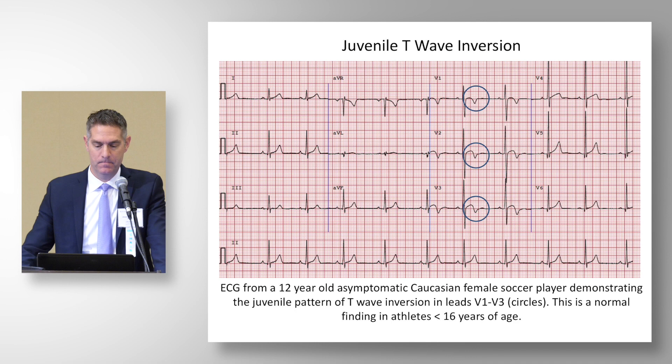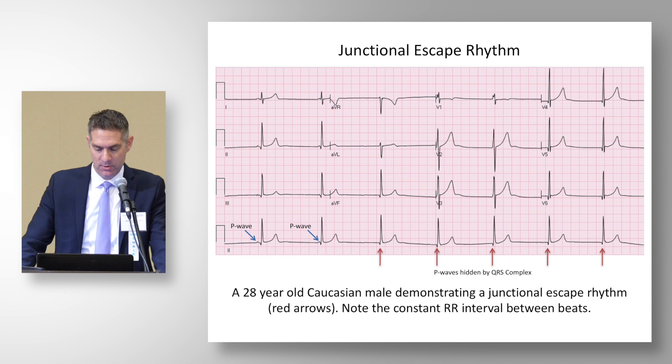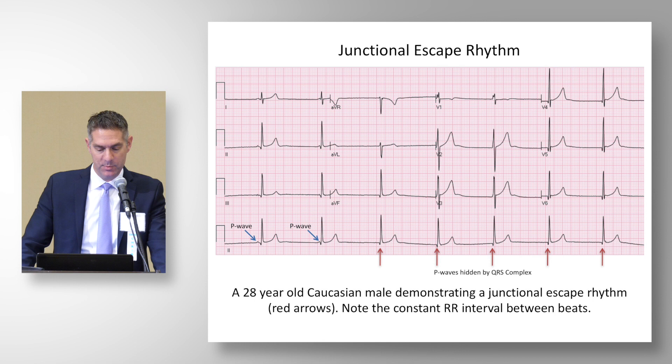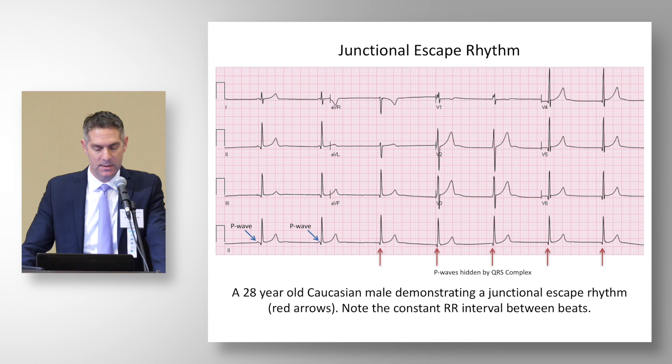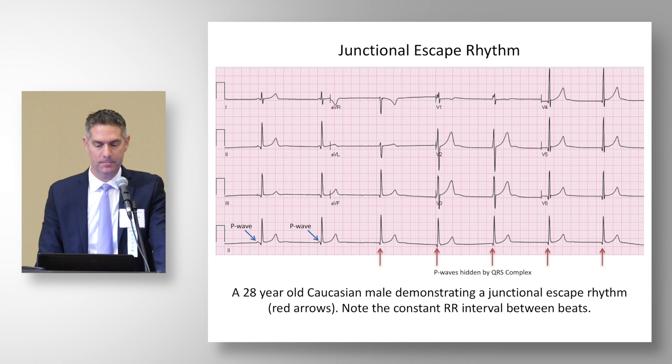This is an example of a junctional escape rhythm in a 28-year-old Caucasian male. Looking at the lead 2 rhythm strip, when you search for P waves you'll see a couple early and some hidden in the QRS complex, with a very consistent R-R interval representing the junctional escape rhythm. As this person begins to exercise, they go back into sinus rhythm. This is a common and normal finding in a young athlete.